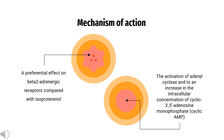Mechanism of Action: Beta-2 adrenergic receptors on airway smooth muscle are GS-coupled, and their activation by Levosalbutamol leads to activation of adenylate cyclase and an increase in the intracellular concentration of 3',5'-cyclic adenosine monophosphate, or cyclic AMP. Increased cyclic AMP activates protein kinase A, which inhibits the phosphorylation of myosin and produces lower intracellular ionic calcium concentrations, inducing muscle relaxation.